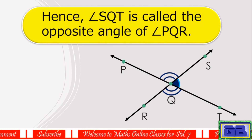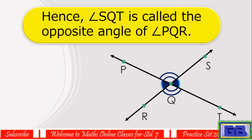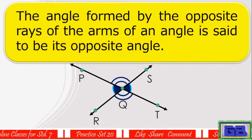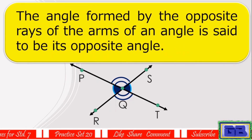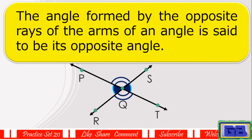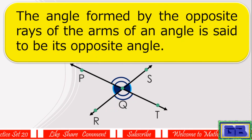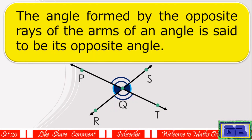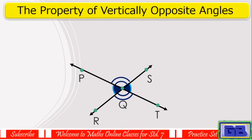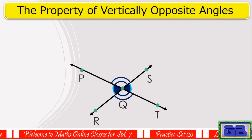These opposite rays form the angle SQT. Hence, angle SQT is called the opposite angle of angle PQR. The angle formed by the opposite rays of the arms of an angle is said to be its opposite angle. Now we will see the property of vertically opposite angles.